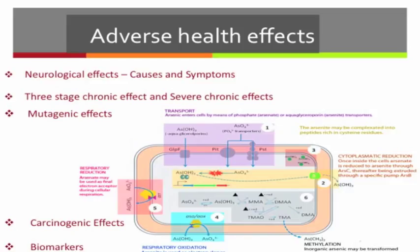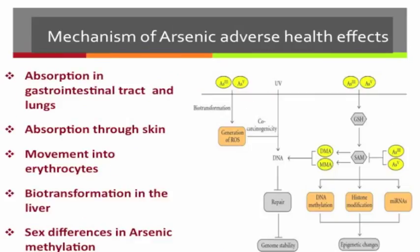Mechanism of Arsenic Adverse Health Effects. Arsenic is taken up through food and is readily absorbed in the gastrointestinal tract. Sodium, potassium, or magnesium arsenides are readily absorbed in the gut and lungs and also through the skin. The fate of arsenic in the body depends on its chemical form. Some compounds, such as arsenobetaine and arsenocholine, which are present in fish, pass through the human body unchanged.